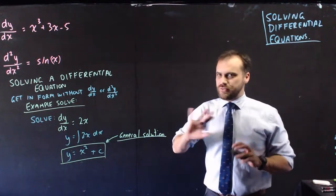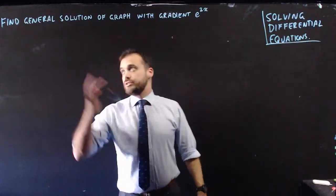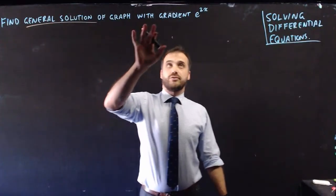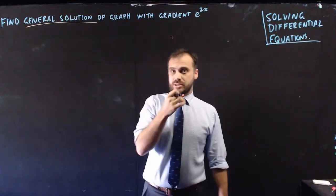Let's just do a few examples. You've done this before. So here's a question: Find the general solution—general solution, that means there's going to be a plus c in it—of graph with gradient e^(2x).